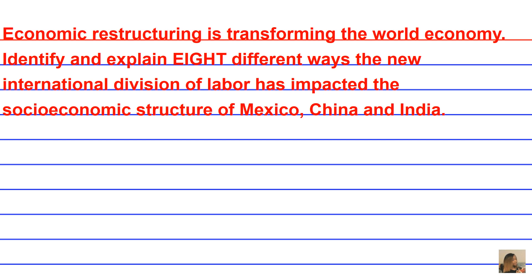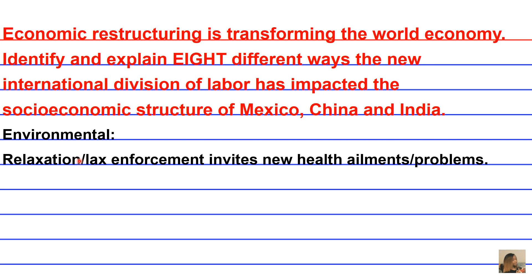A sixth impact the new International Division of Labor has had on developing countries, specifically their socioeconomic structures, is an environmental impact. There is relaxation or lax enforcement of environmental regulations in foreign countries such as Mexico, China, and India, which invites new health ailments and problems. Industrialization also ushers in pollution, which isn't as heavily regulated as in the United States.